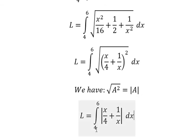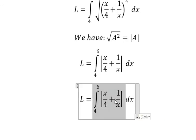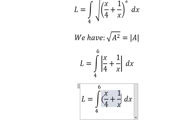So from number 4 to number 6 they are positive, so when we put in here the absolute value of x over 4 plus 1 over x, we can remove the absolute value bars.